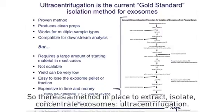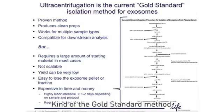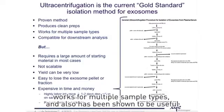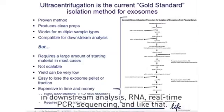There is a method in place to extract, isolate, and concentrate exosomes: ultracentrifugation, used very extensively — kind of the gold standard method. It has a lot of pros. It's a proven method, many people use it, it produces clean preps, works for multiple sample types, and has also been shown to be useful in downstream analysis: RNA, real-time PCR, sequencing, and the like.